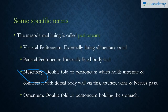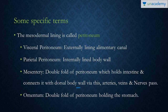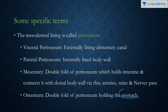Then we have the mesentery. Mesentery is a double fold of peritoneum which holds the intestine and connects it to the dorsal body wall. Arteries, nerves, and veins pass through it. So mesentery is basically a type of peritoneum — a double fold around the intestine or bowel.